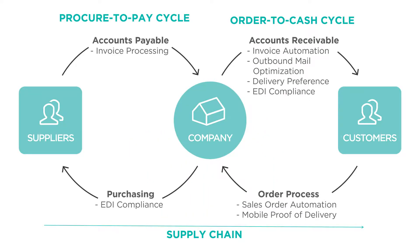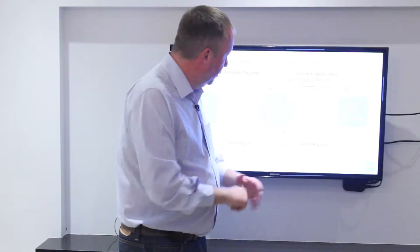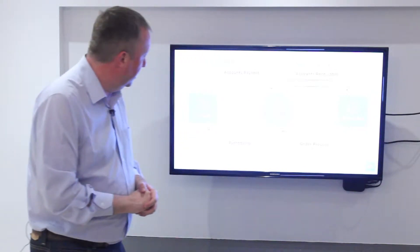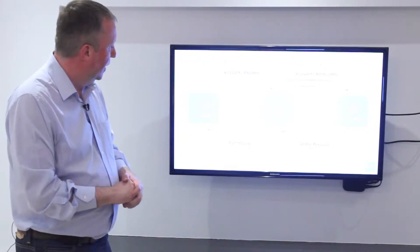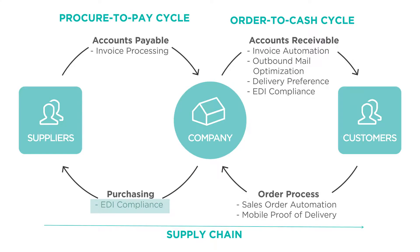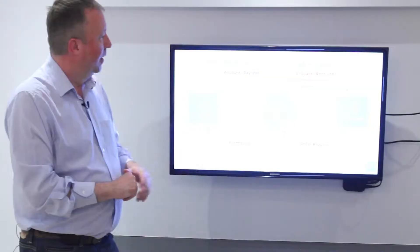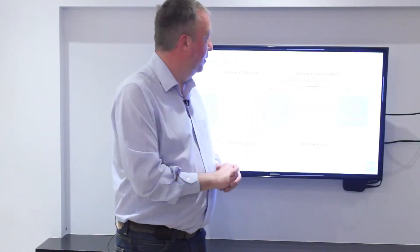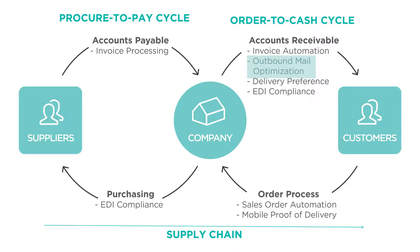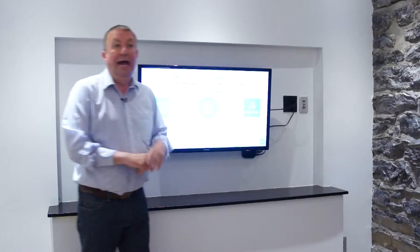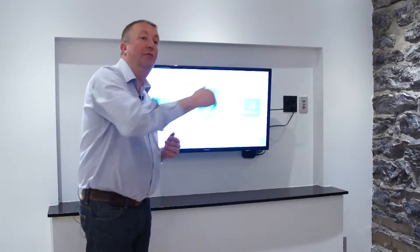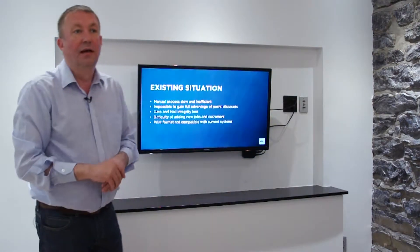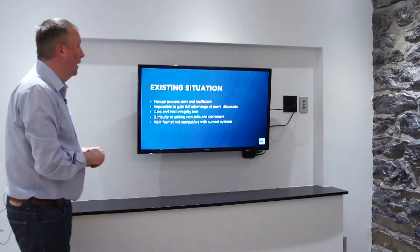Here's some things that we do. We talk about sales orders, maybe invoicing to your customers. Maybe we talk about EDI. Maybe we talk a little about accounts payable. But here, we're going to talk a lot about mail optimization, and it's part of the accounts receivable process — how do you get your most important documents out of the building in the most efficient way?